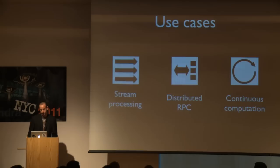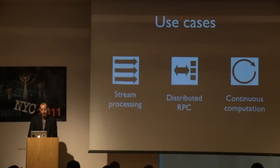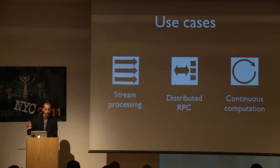There are three broad use cases for Storm. The first is stream processing: you read something like a Twitter firehose and update databases based on that stream, discarding messages once done. The second is distributed RPC: you have some function that's too expensive to compute on a single machine, so you implement it as a Storm topology and parallelize the computation. The third is continuous computation: you want to continuously know the results of some function, like computing trending topics on Twitter.